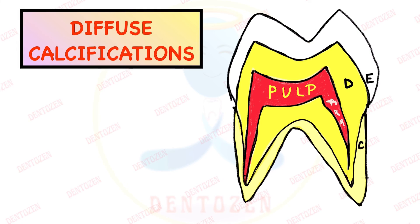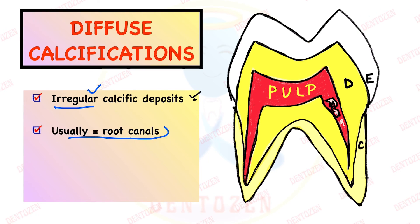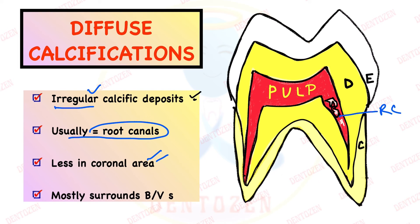There can also be diffuse calcifications. As you can see in the picture, there can be irregular calcifications inside the pulp, called diffuse calcifications. They are irregular calcific deposits, more commonly seen in the root canals and less in the coronal area, and they mostly surround blood vessels.